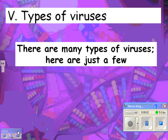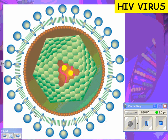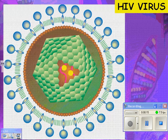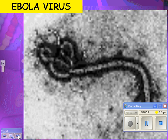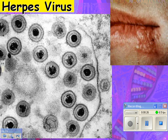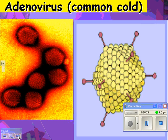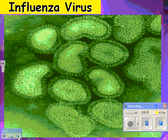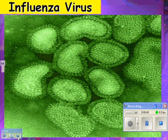We're talking about viruses today and we're going to look at some types of viruses. Here's HIV — you've got your RNA inside and your protein coat, which is the capsid, and then you've got a lipid layer on the outside. Here's Ebola, actually a really big virus. Here's a herpes virus, and here's an adenovirus which is a common cold virus. Influenza — remember there are lots and lots of different types of flu viruses and lots of different types of cold viruses.